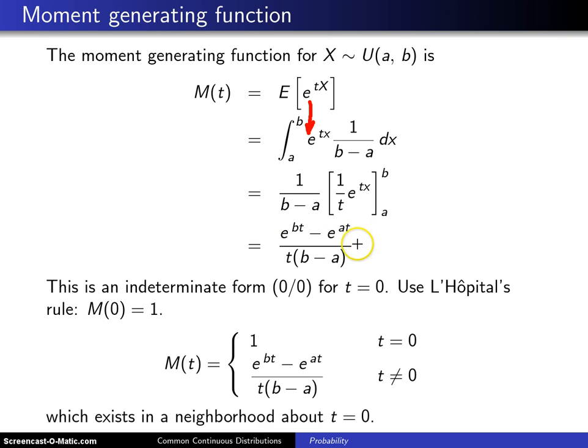you get a numerator that looks like this, and then a denominator, which is t times b minus a.